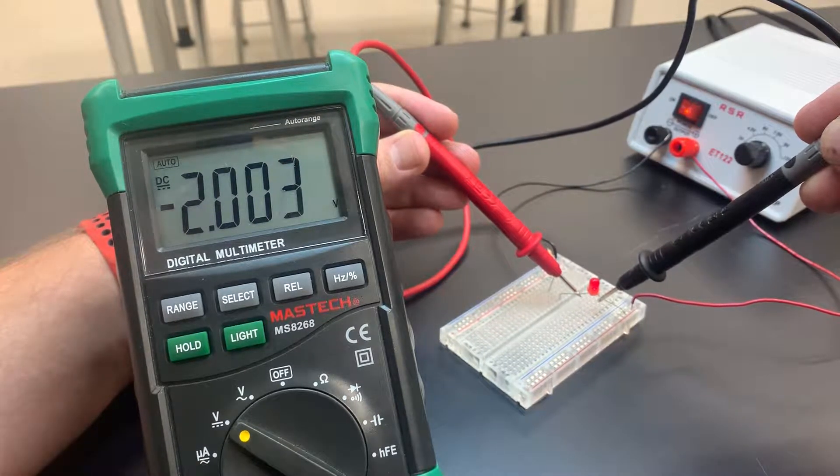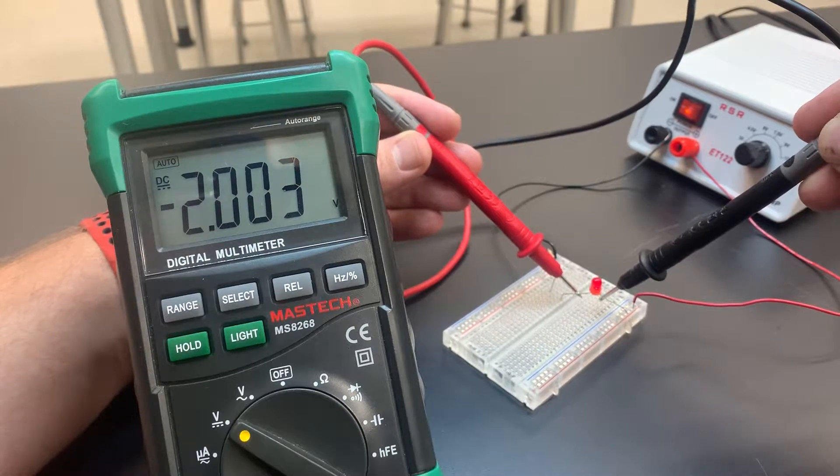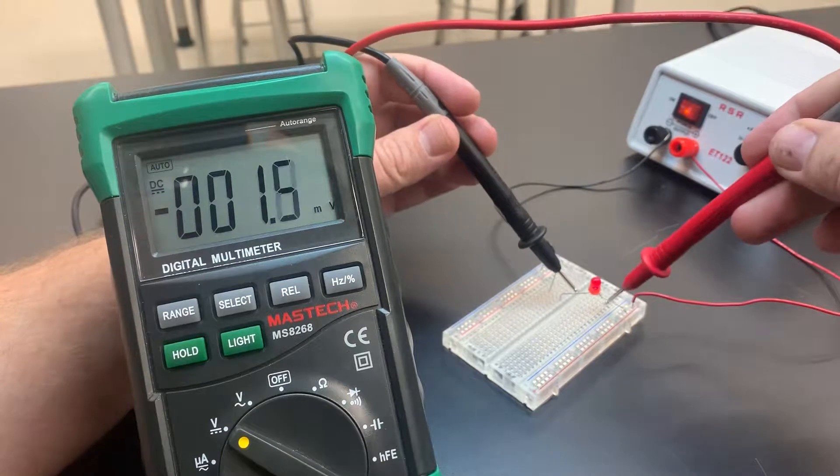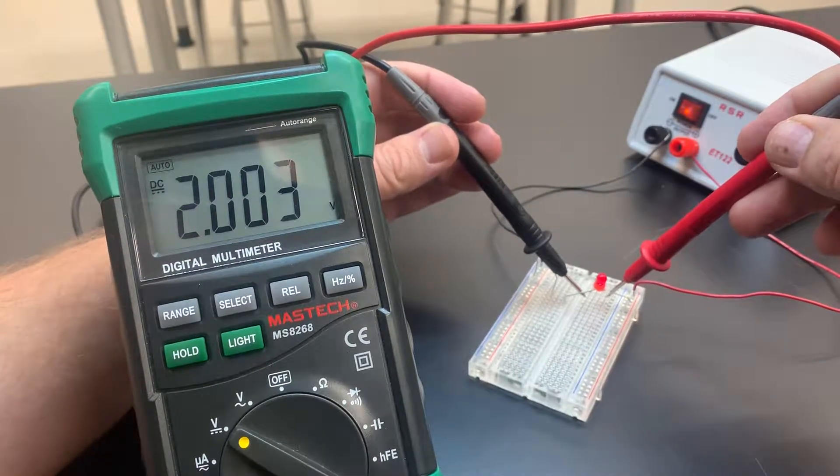So when I put it across the LED, you can see that it measures negative two, which means I just need to switch my leads and put the positive on the positive side. And now it measures two volts.